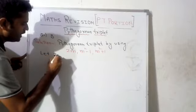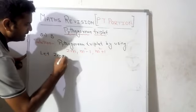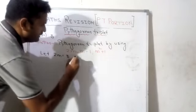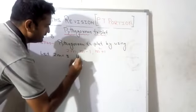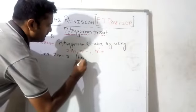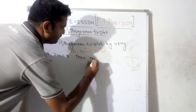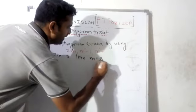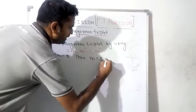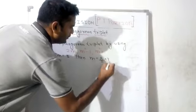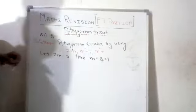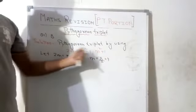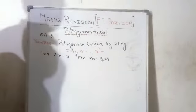Let 2m equal to 8, then m equals 8 divided by 2, which equals 4. We can now put the value of m into this formula.